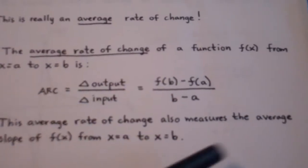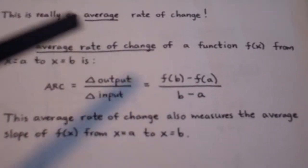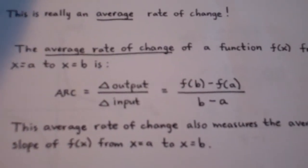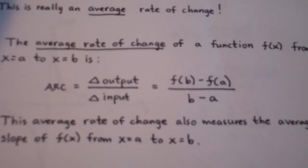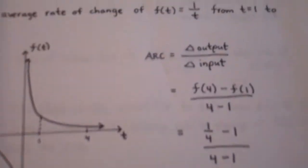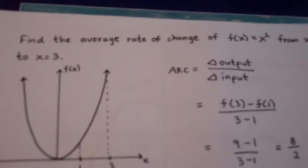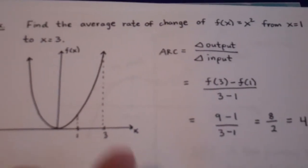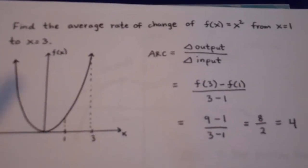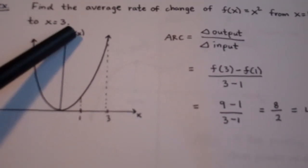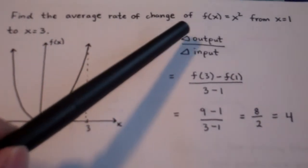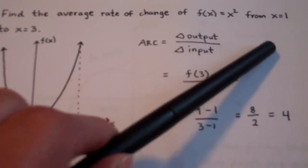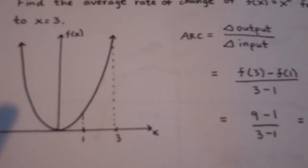To make sure this all makes sense, let's look at a couple of specific examples. Let's find the average rate of change of f of x equals x squared from x equals 1 to x equals 3.